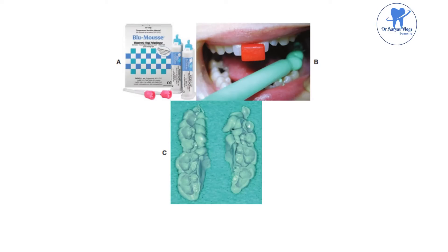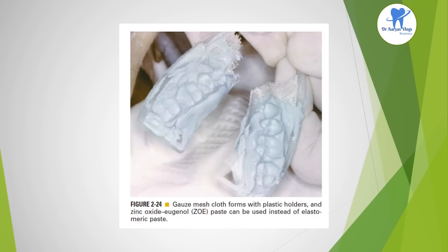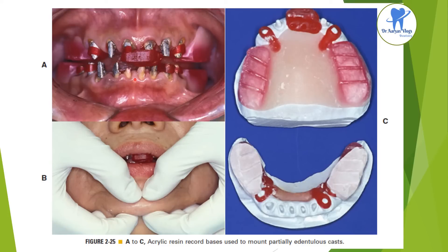This is the centric relation recording using elastomeric material. Once the mandibular coordinates are set, the dentist uses an anterior resin jig to ensure a reproducible recording position is obtained. The patient remains occluded until the material has set. This is the appearance of the record before trimming. Gauze mesh cloth formed with plastic holders and zinc oxide eugenol paste can be used instead of elastomeric paste. This picture shows acrylic resin record bases used to mount the partially edentulous cast.